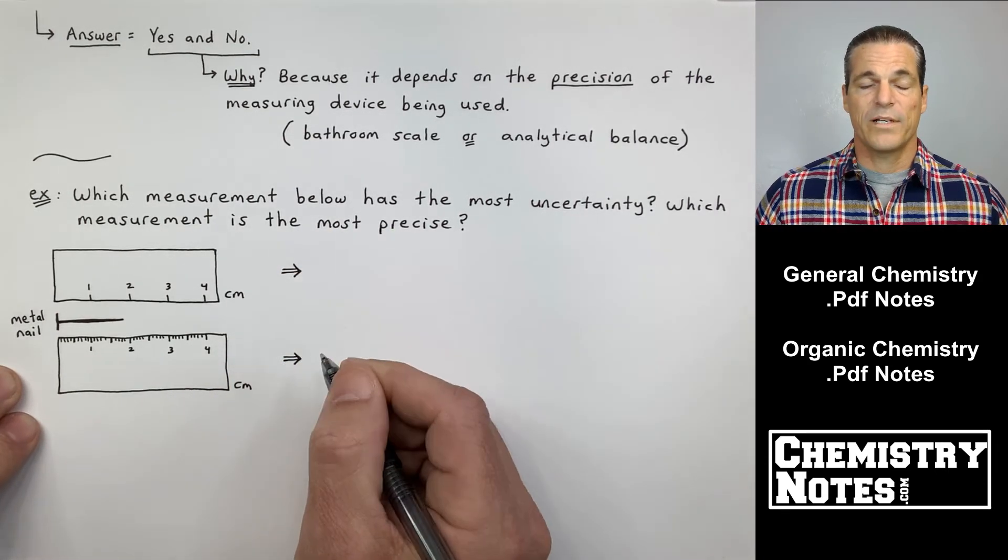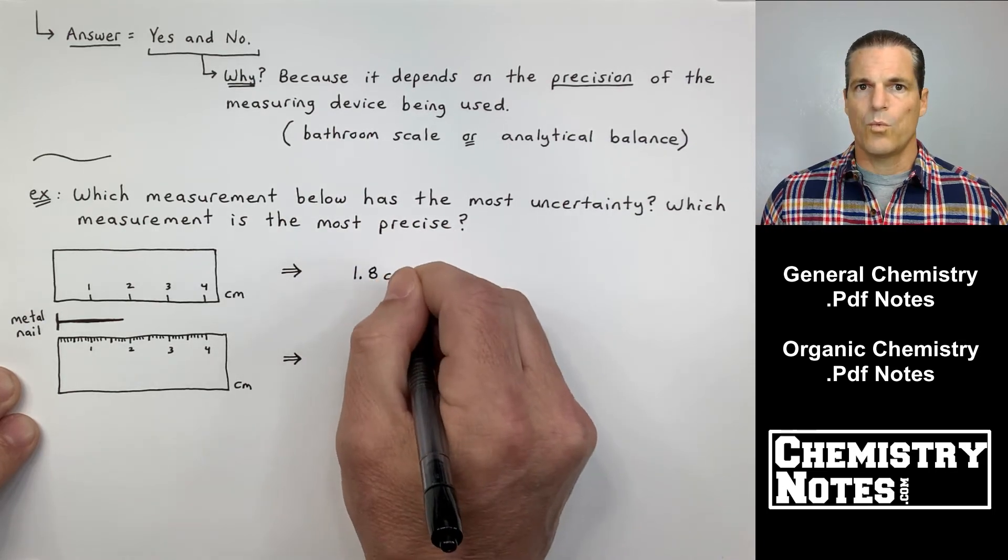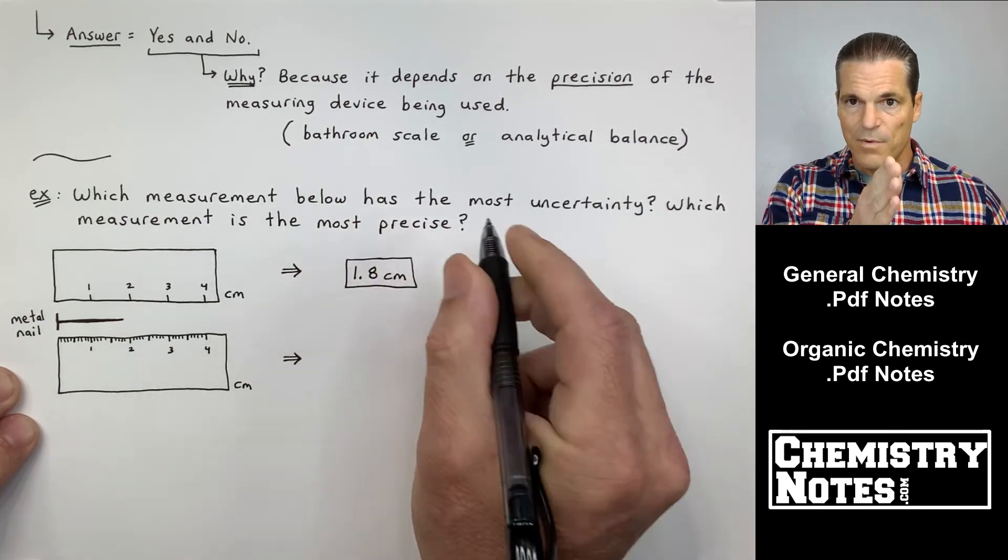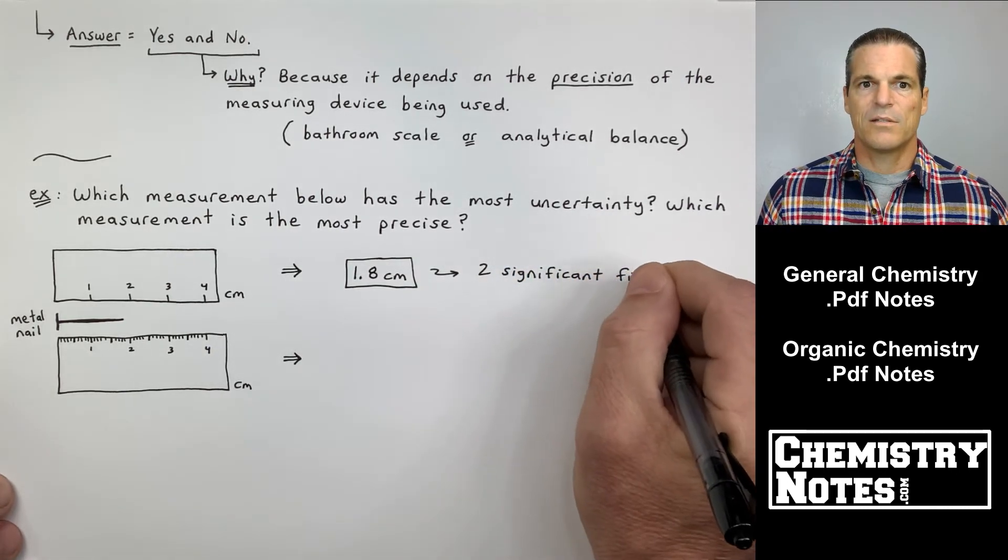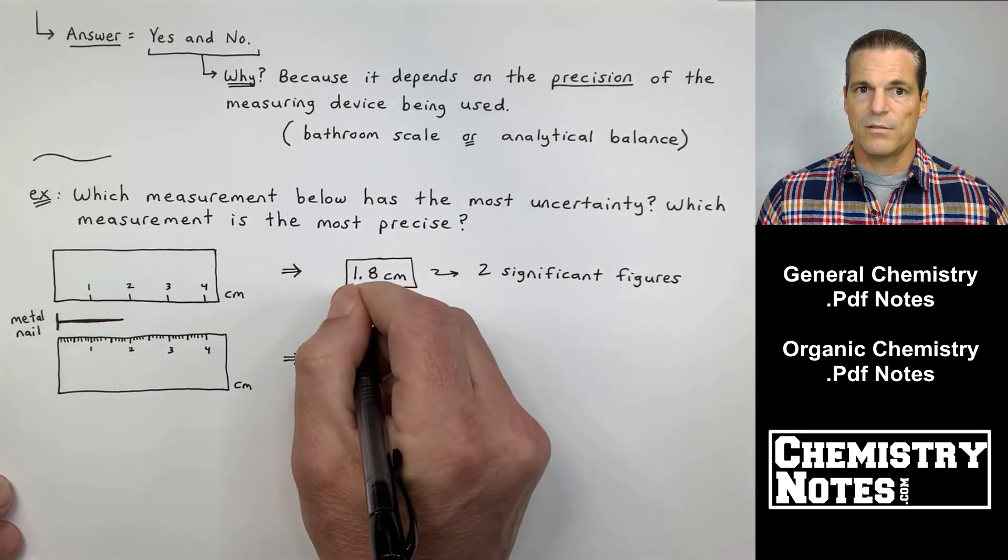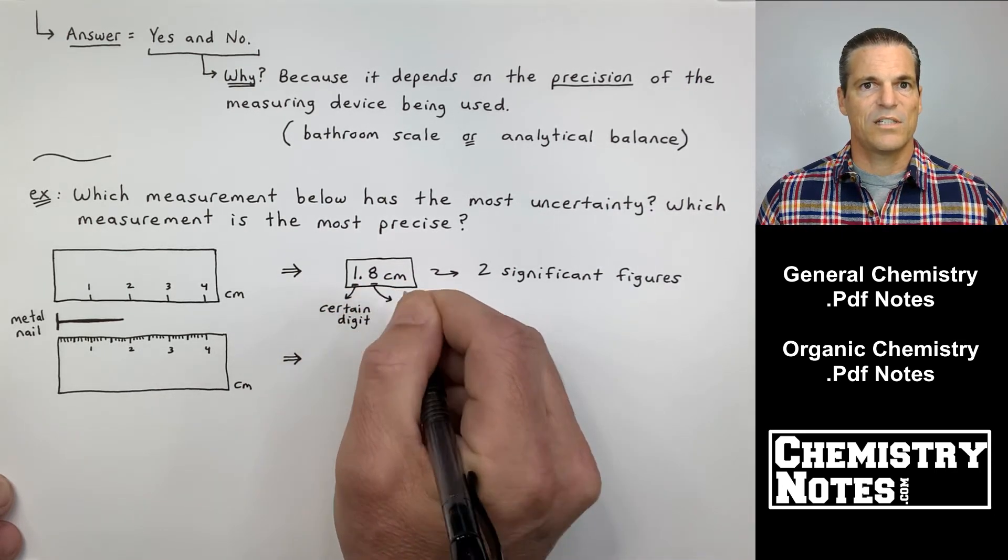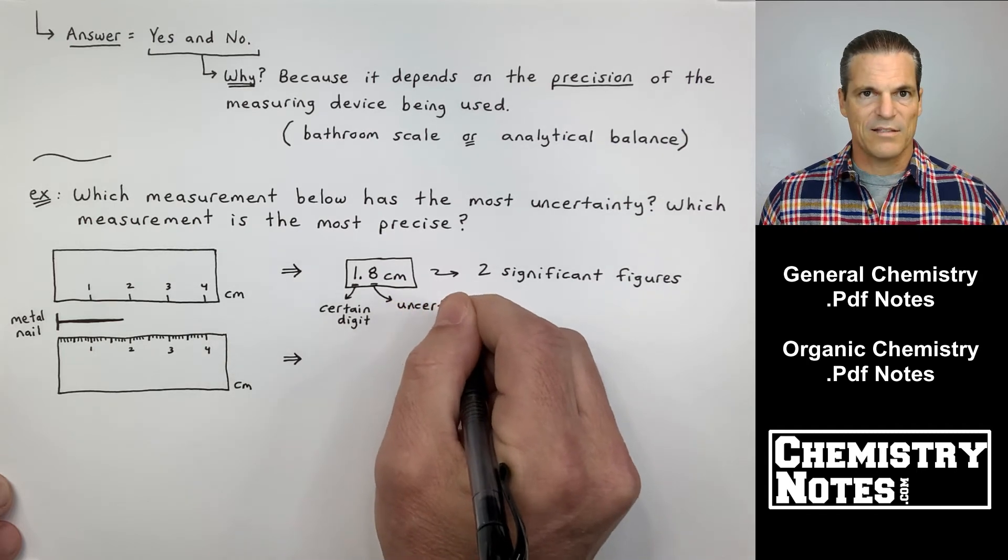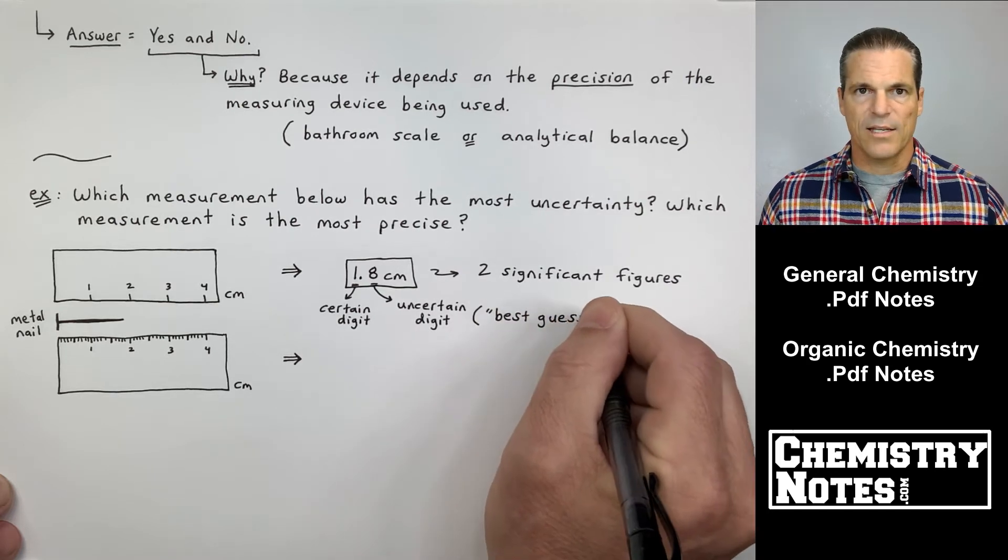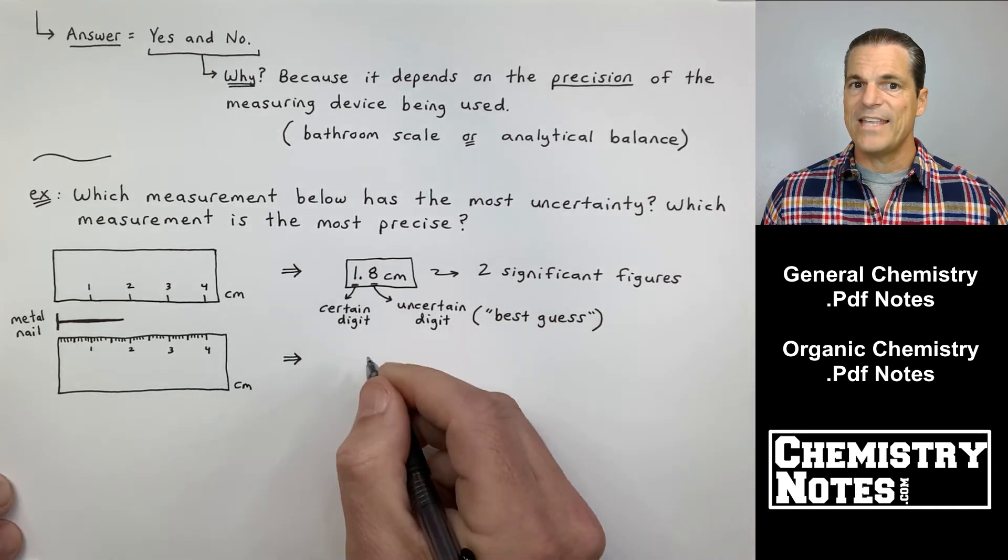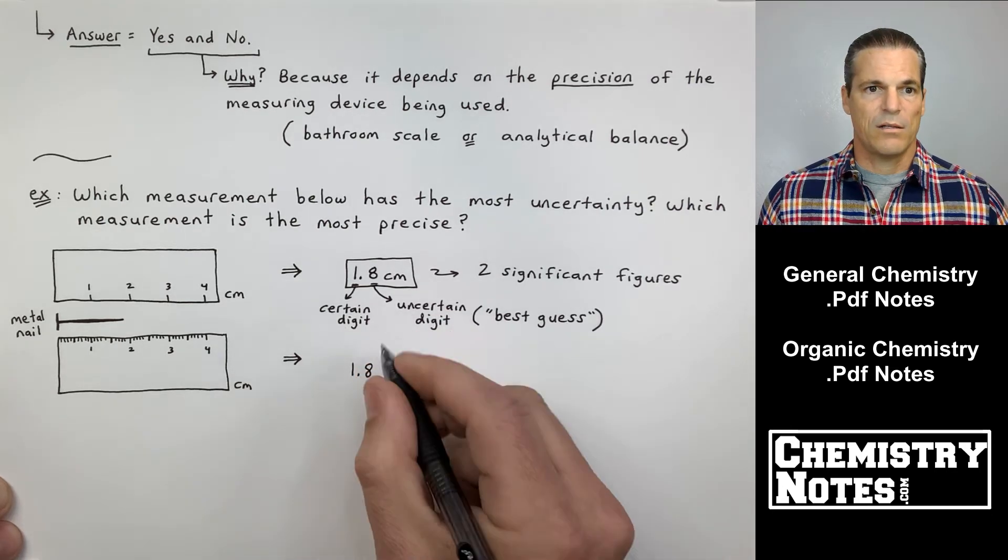So the metal nail, according to the top ruler, I know for sure it's in between one and two because the one and two are tick marks. They're there. I can see them. My best guess is the eight. So this is 1.8 centimeters. That has two significant figures. First time we've seen that phrase, two significant figures. More on that in a second. The one was my certain digit. There was no guessing with that one. The 0.8, that's my best guess. That's my uncertain digit.